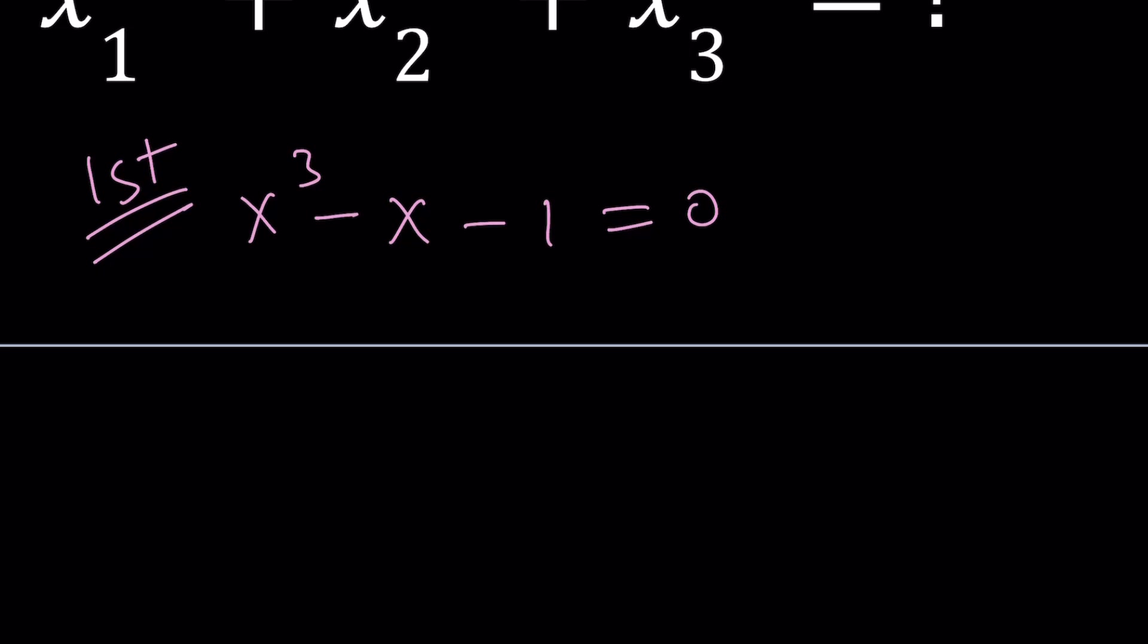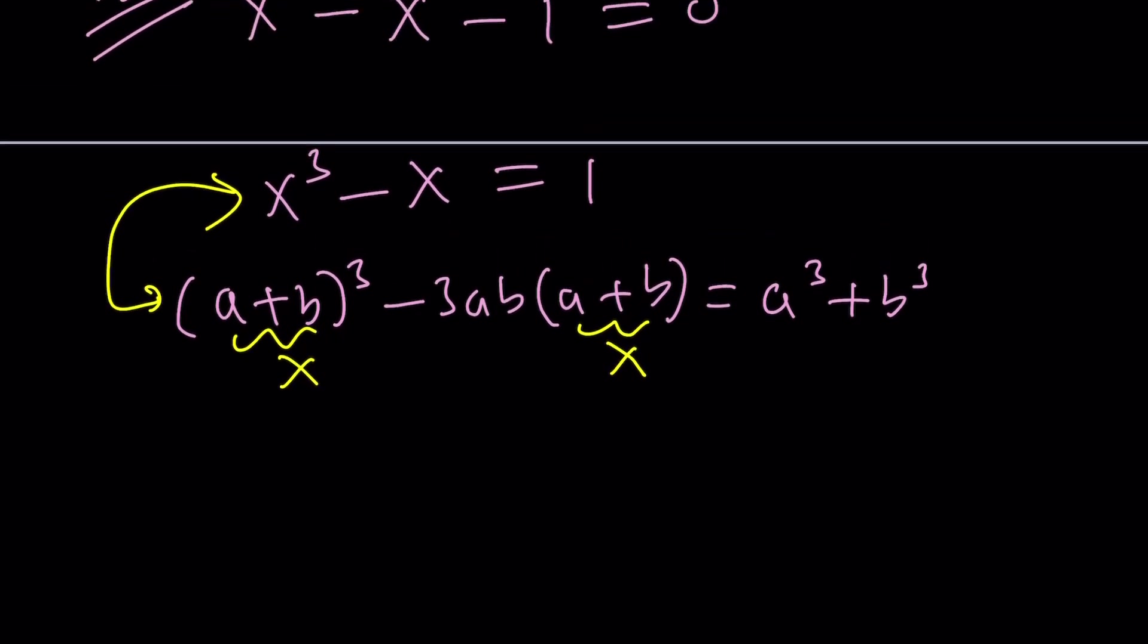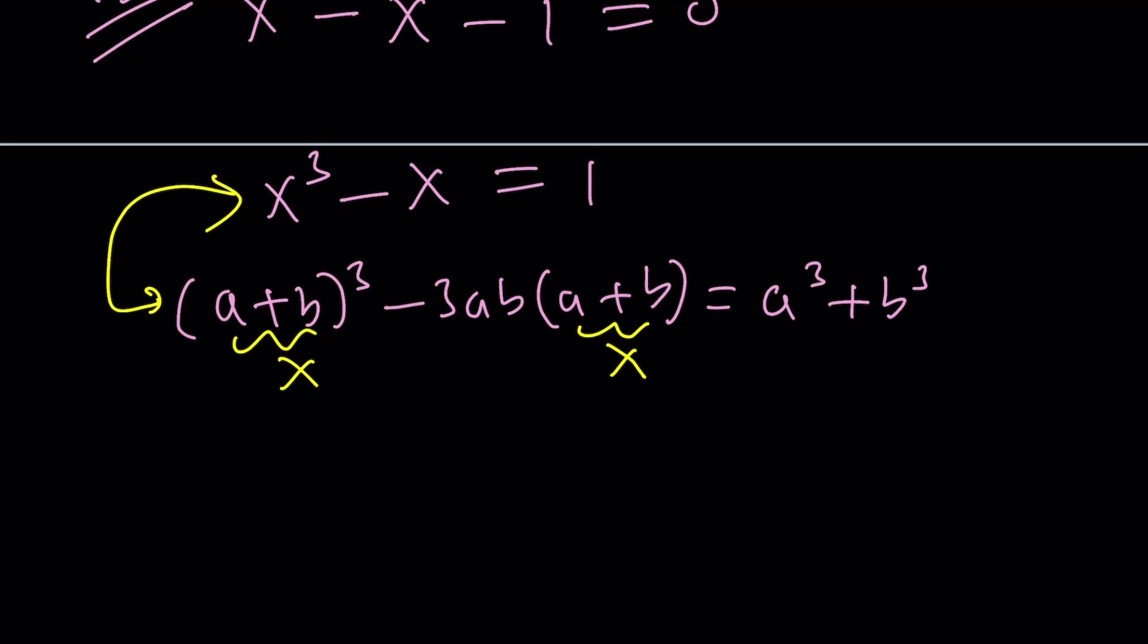So one thing you can do is isolate the constant and then write this as a plus b cubed minus 3ab times a plus b equals a cubed plus b cubed. This is an identity. And then if you set a plus b equal to x, then by comparing these two equations you're going to obtain a cubic formula. So to solve this cubic equation, we can turn it into a quadratic, reduce the power.